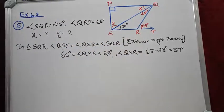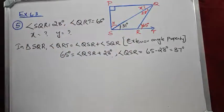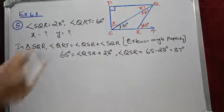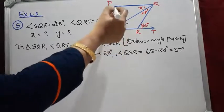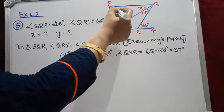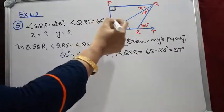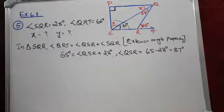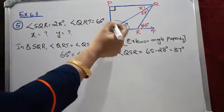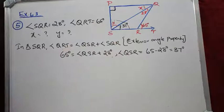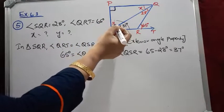Now look at the figure again. PS and PQ are perpendicular, so this angle is 90 degrees. Since PQ and SR are parallel lines and PS is a transversal, angle P and the complete angle S form a pair of co-interior angles. Co-interior angles are supplementary, so their sum is 180 degrees. We use this property to find Y.